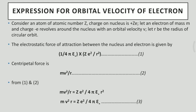We shall understand what is an expression for orbital velocity of an electron. Consider an atom of atomic number Z with nuclear charge Ze. Let an electron of mass m and charge minus e revolve around the nucleus with an orbital velocity v. If r is the radius of the circular orbit, then according to Bohr's postulate, the necessary centripetal force is being offered by the electrostatic force of attraction between the electron and the nucleus. The electrostatic force of attraction is given by Ze² / (4πε₀r²).